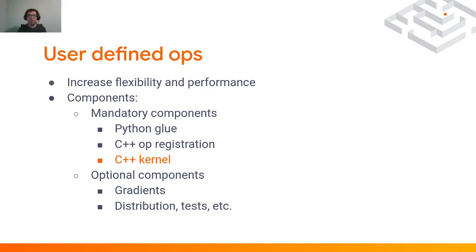Each operation in TensorFlow has both mandatory and optional components. The optional components are useful for speeding up learning, distribution, testing, and so on. The mandatory components are needed such that a user could use this operation. From these mandatory components, we have the Python glue so you can use it from Python, since TensorFlow is mainly a Python framework. We have the C++ op registration — basically the link between the Python API and the piece of code that will be executed at runtime — and finally the C++ kernel, which is where the entire computation happens.